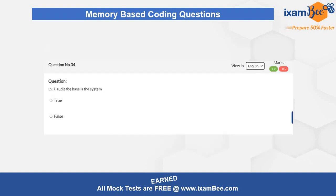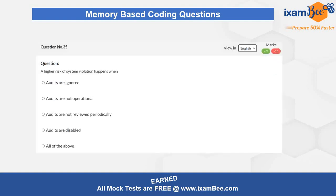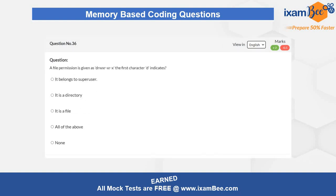Question 34 is a simple statement where you have to identify whether that particular statement is true or false — easy yet conceptual and static. Question 35 is related to network audit and system audit under the cyber security topic. Here you have to identify what risk violation occurs when certain conditions are met — again a conceptual but static question.